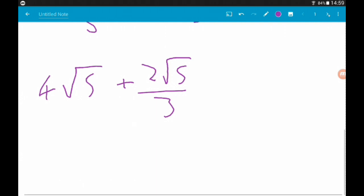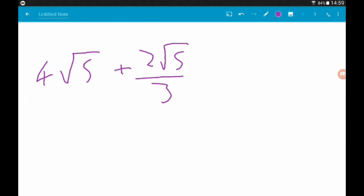But, that doesn't really sound or look very nice. So, what I'm going to do here is turn 4 root 5 into a fraction in terms of thirds. So, 4 is the same as 12 thirds. So, 4 root 5 we can say is 12 root 5 over 3.